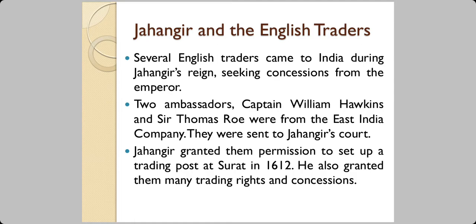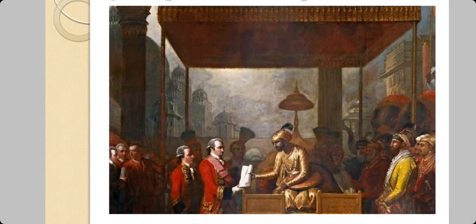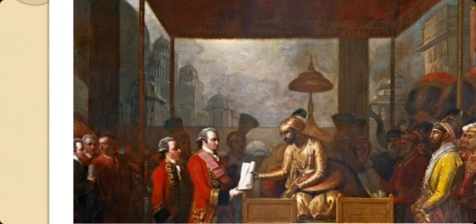During Jahangir's reign, a lot of Europeans started coming to his empire, and several English traders came to India seeking concessions from the emperor. Two such people were Captain William Hawkins and Sir Thomas Roe, both from the East India Company — which later became a cause of the British ruling over India. Jahangir granted them permission to set up a trading post in Surat, which is in Gujarat, in the year 1612, and also granted them many trading rights and concessions. This painting shows Jahangir with these two people from the British court.